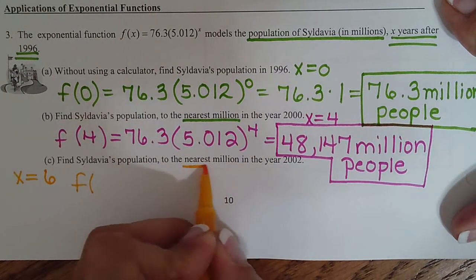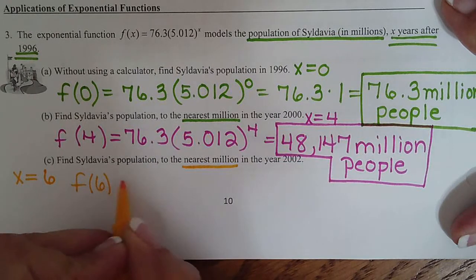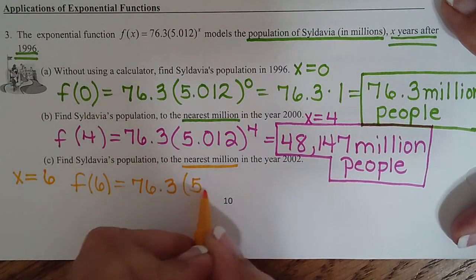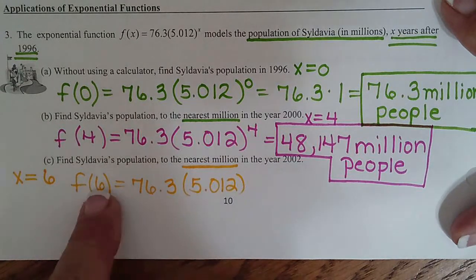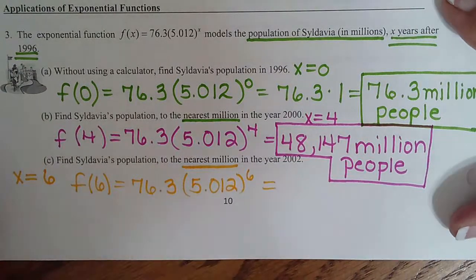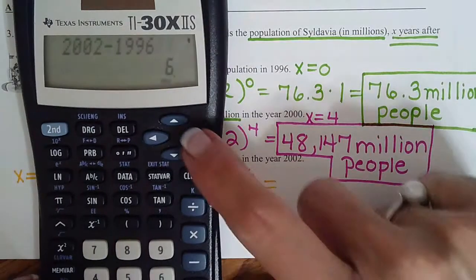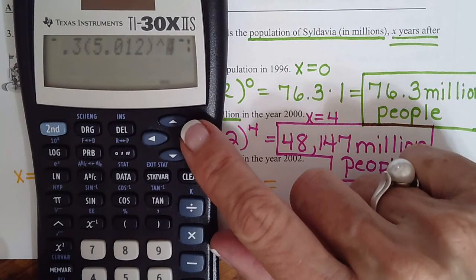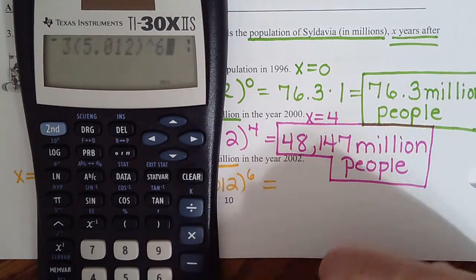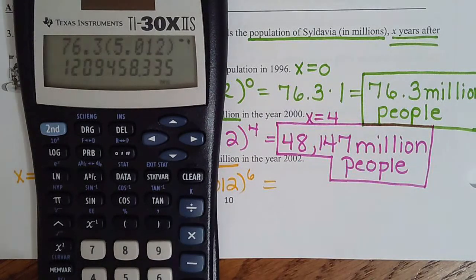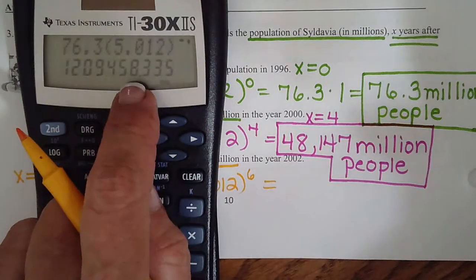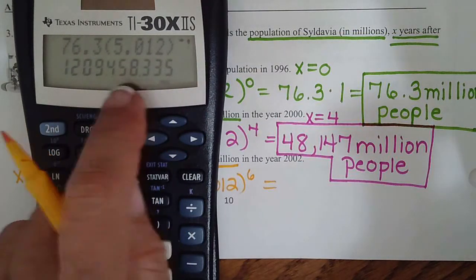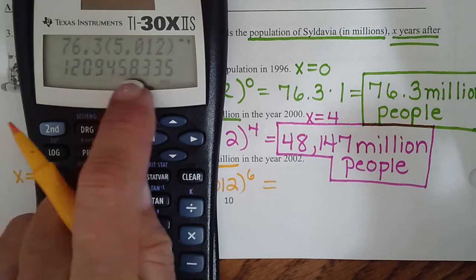So we do the same thing. We are smelling again. So F of six is 76.3 times 5.012 to the sixth. So what we can do is we can move the up arrow, up arrow, and just change our four to a six. Ding, ding, ding. That's a nice shortcut, huh? So again, it's the nearest million, so that would be the whole number. So eight followed by three says keep it eight. So it would be 1,209,458.